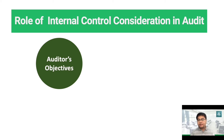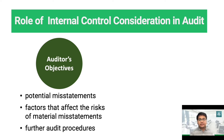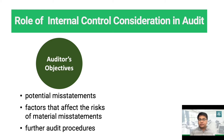Part of our understanding of the client's business includes their internal control system. Our objective as auditors in studying and evaluating the internal control system is: number one, to identify potential misstatements in the financial statements; number two, to identify factors that affect the risks of material misstatement; and number three, to design our further audit procedures. Importantly, we will not be issuing an opinion on the effectiveness of internal control itself.